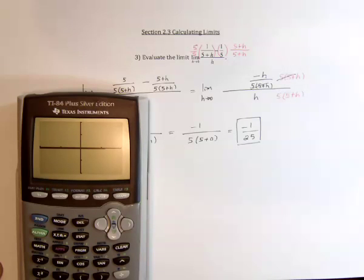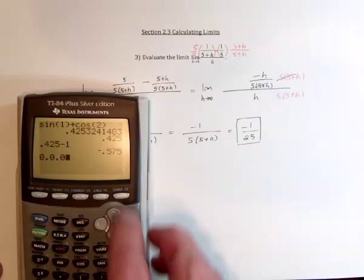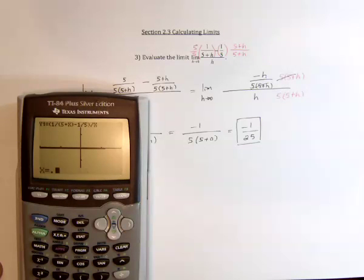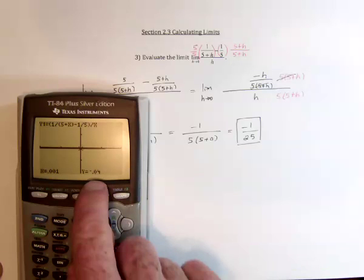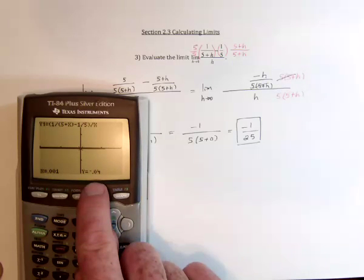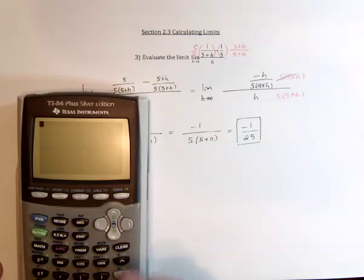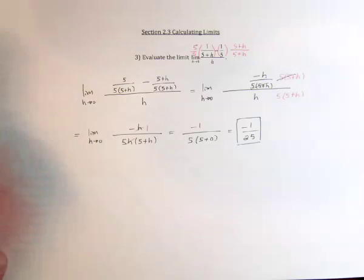So negative 1/25. If this is 0.001, then negative 0.04. Let's see. Negative 1/25. Yes, that's right. Okay, great. We've got it.